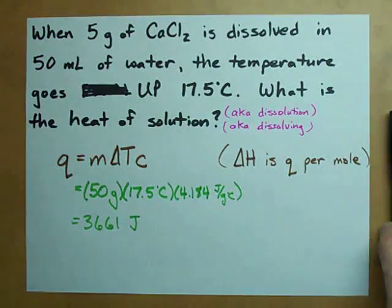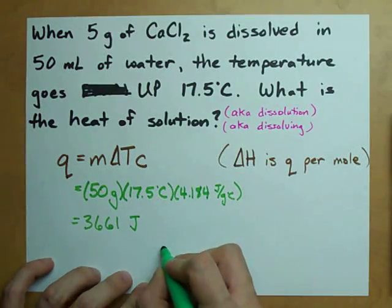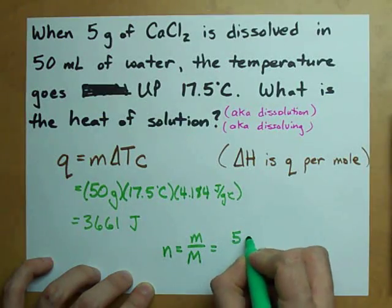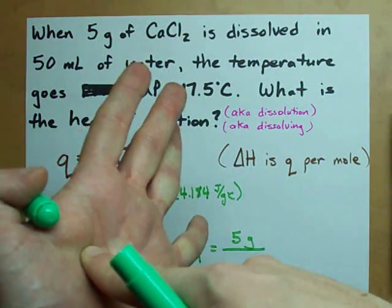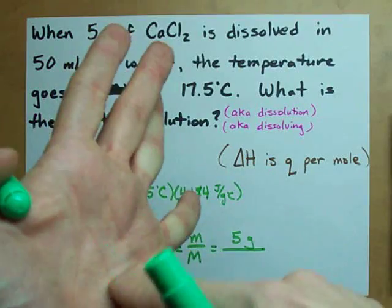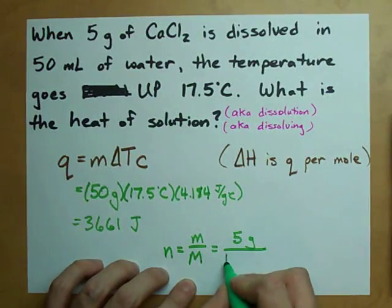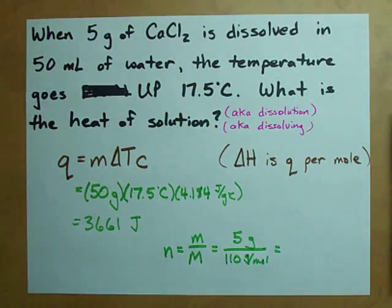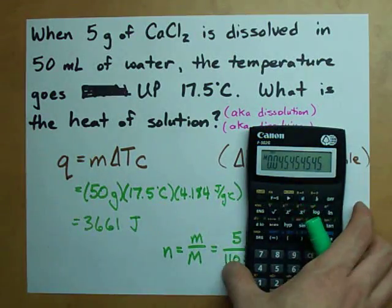But here's the deal. ΔH, or the heat of dissolution, is usually per mole. So I need to know how many moles of the solid I dissolved. Remember how to find the number of moles from mass? You find the mass that you have, in this case 5 grams, and divide it by the molar mass of the substance. That's the atomic mass of calcium plus 2 times the atomic mass of chlorine. You end up with, I think it's 110 point something. I should have recorded that. Let's just assume it's 110 grams per mole. So 5 grams is worth 0.045 moles.